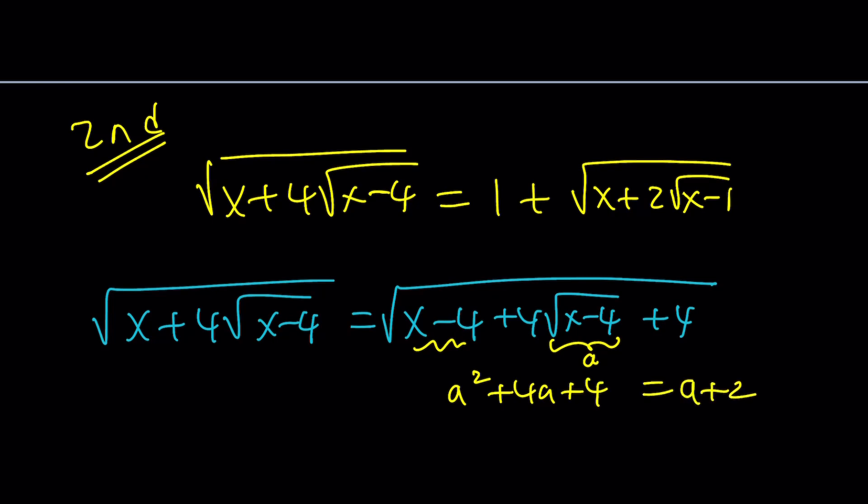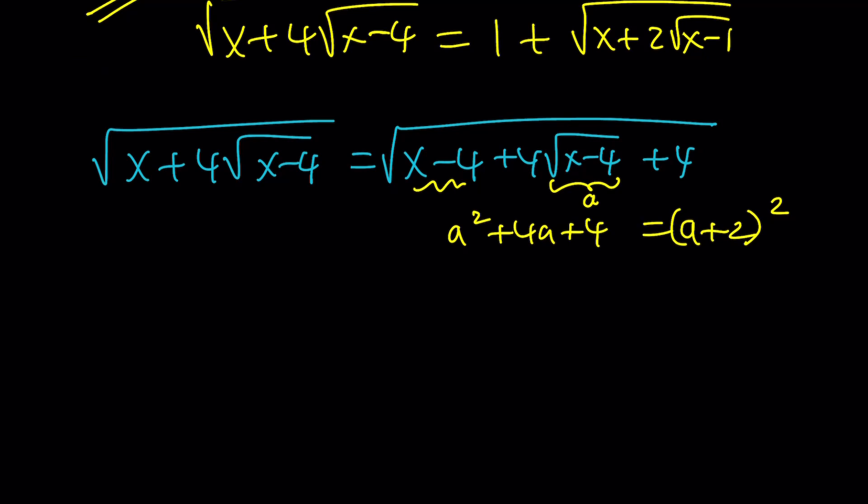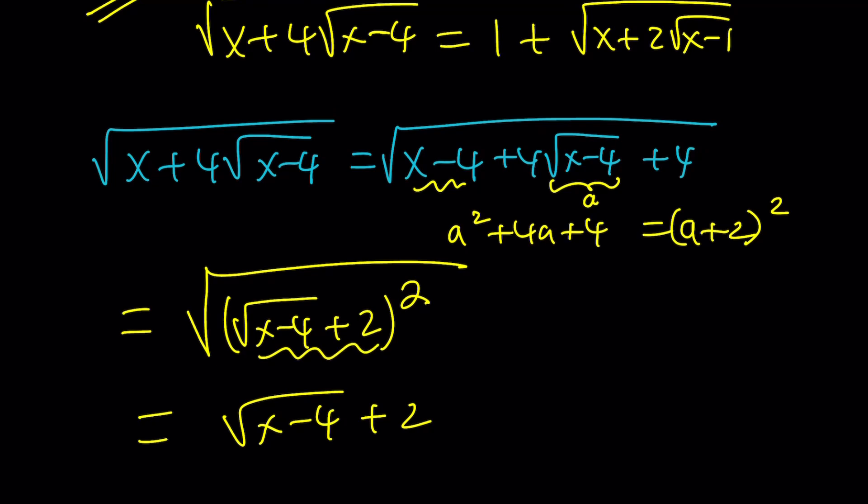So if you kind of call this a, this will be a squared plus 4a plus 4. And what does that remind you? Yes, it should remind you a plus 2 squared. Make sense? In other words, this expression under the radical is square root of x minus 4 plus 2 quantity squared. And with the square root, you just get rid of the radical and write this as the square root of x minus 4 plus 2. But isn't that absolute value? Yes, but this is absolutely positive quantity. So we're good.